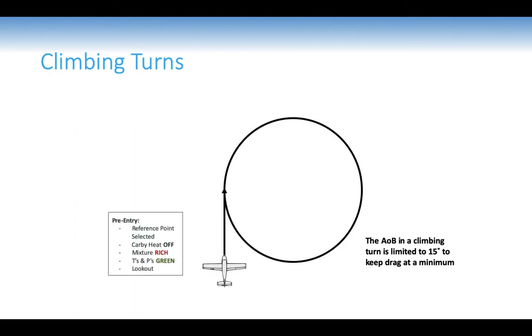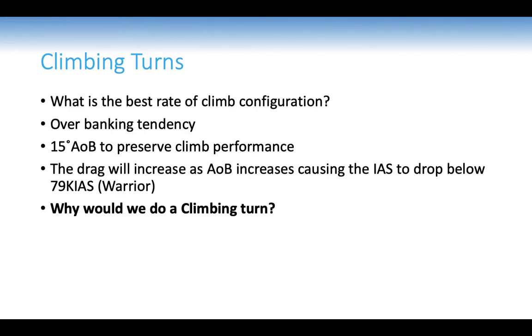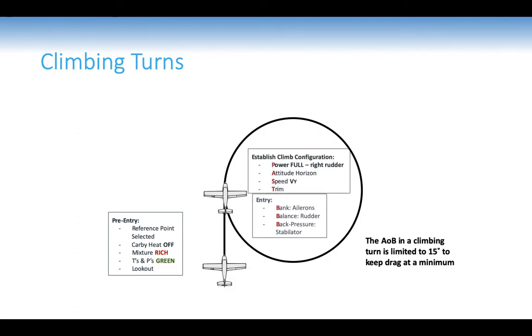Climbing turn procedure: angle of bank limited to 15 degrees to keep drag minimal. Pre-entry checks: reference point selected, carby off, mixture rich, T's and P's green, good lookout. Establish the climb first: full power with a bit of right rudder, attitude nose on horizon, speed VY 79 knots, trim and balance. Entry using bank, balance, back pressure: bank using ailerons to 15 degrees, balance using rudder, back pressure using stabilator. You may need to lower the nose to maintain 79 knots.